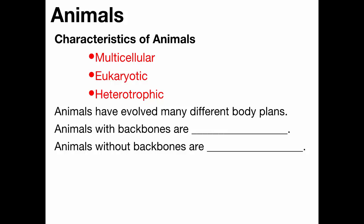Animals have evolved many types of body plans, many ways of living and acquiring nutrition. There's a wide variety of types of animals. We split them into major groups: animals with backbones and without backbones. Vertebrates are animals with a backbone, and invertebrates are animals without a backbone.